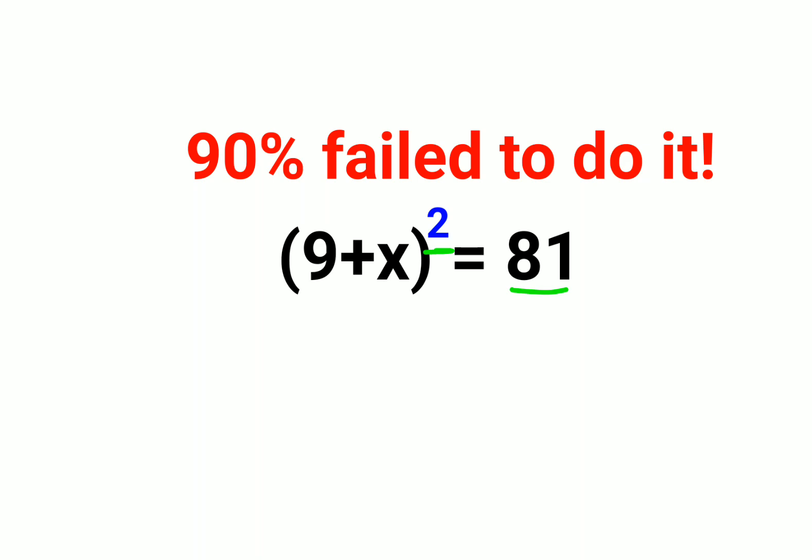So when you have something like this, in that case what should you do? Understand whenever you have a variable which is equal to a perfect square, let's say 81 in this case.